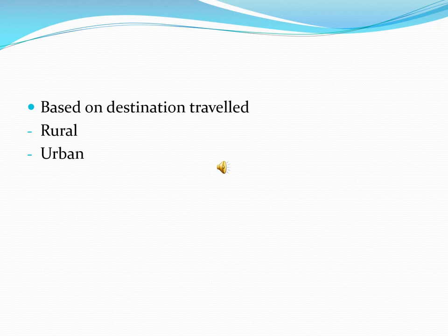Based on destination travel, there are two typologies: rural tourism and urban tourism. Rural tourism is primarily in rural or peripheral areas with a rural economy. Urban tourism is largely in metropolitan cities — for example, Goa and Delhi. Rural tourism can be in outskirts such as Himachal, in places like Kinnaur or rural areas of Kullu-Manali.